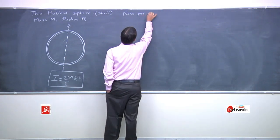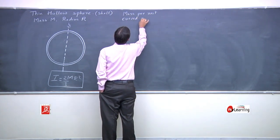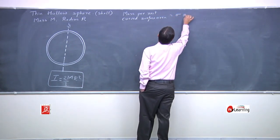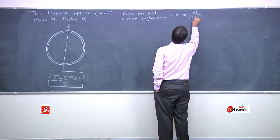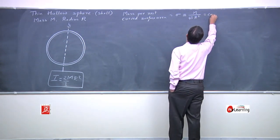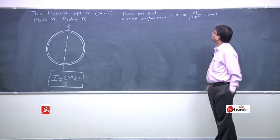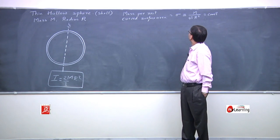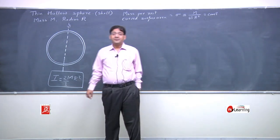We define mass per unit curved surface area, denoted by σ. The mass is M and the area is 4πR², so σ = M / 4πR², and it's a constant.